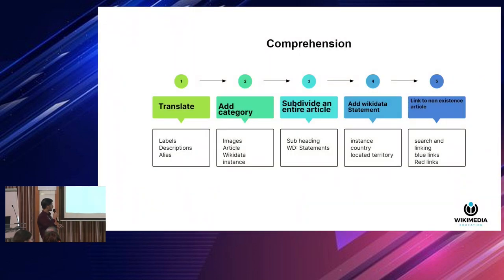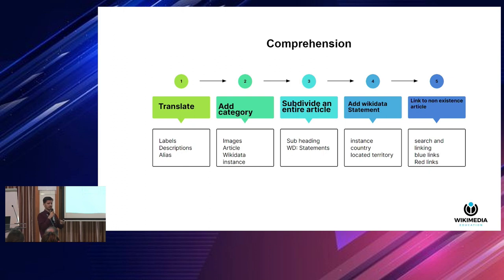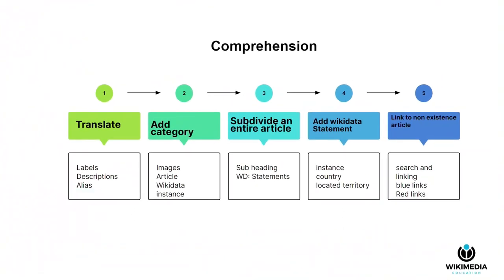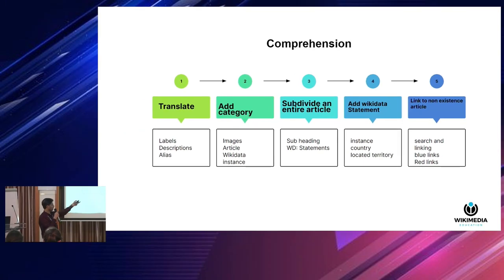At the Comprehension level, learning is a little more advanced. Students are not only recalling facts but categorizing and translating them. Activities include adding statements, linking to not-yet-existing data, and adding labels in different languages. For example, students can translate an English label into their local language — that is the translation component at this level.